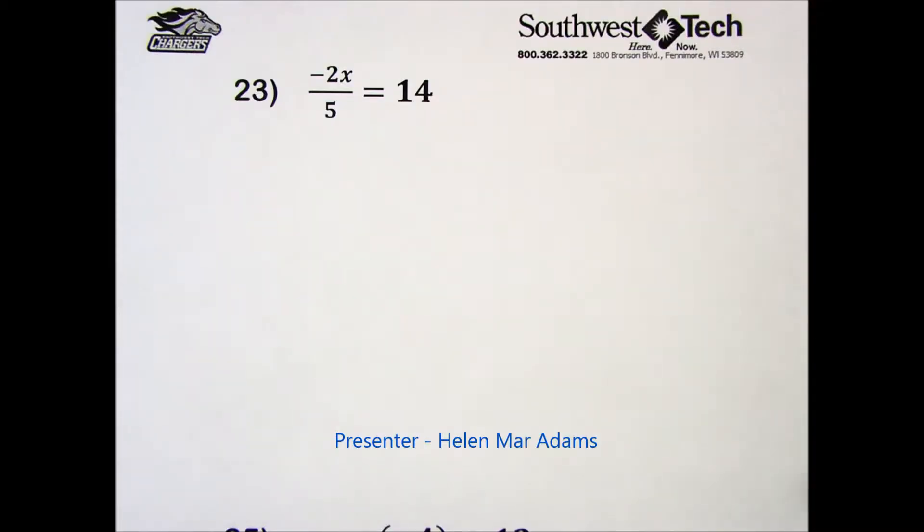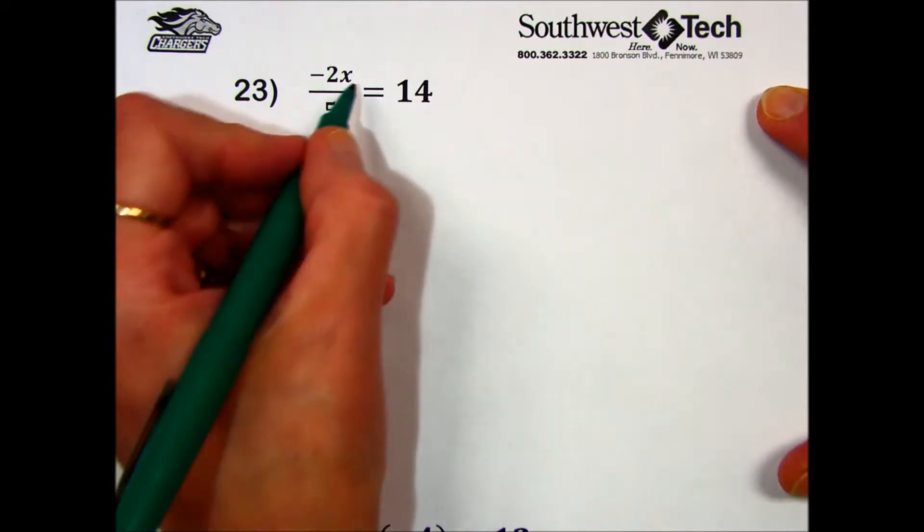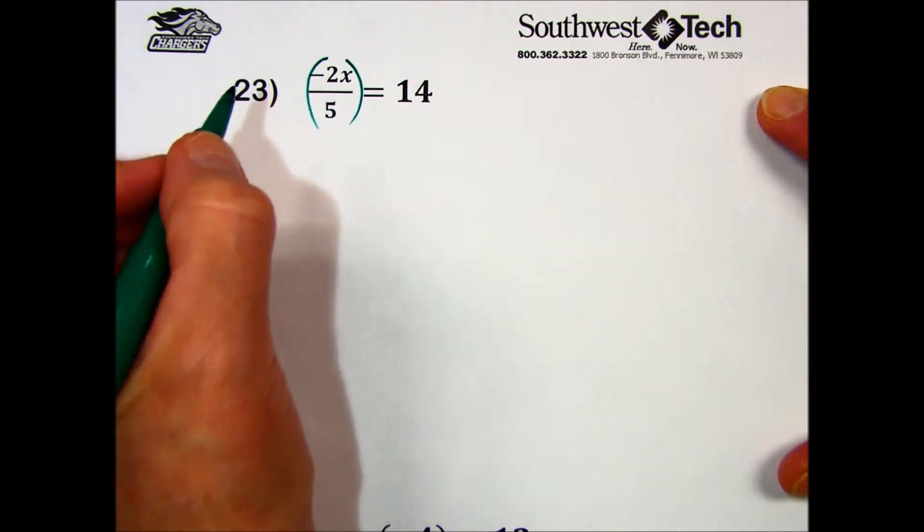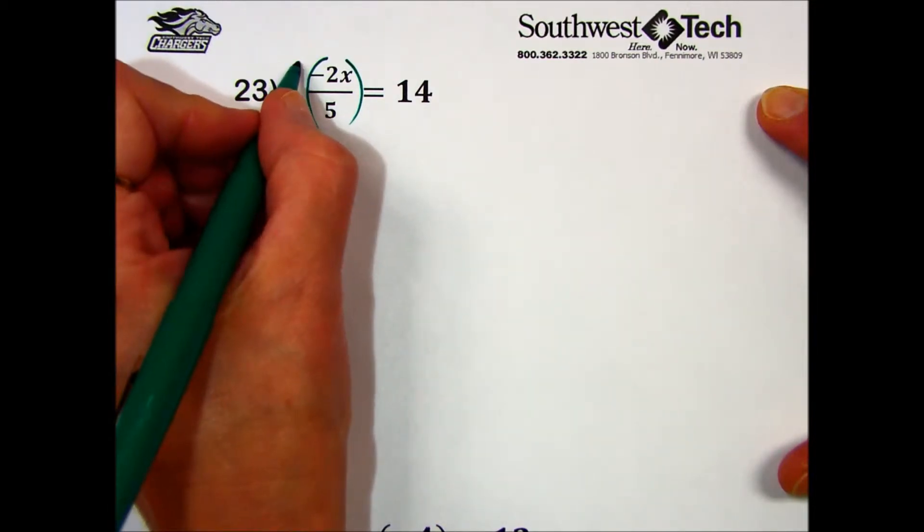Practice set 22, problem number 23. In this equation, x is being multiplied by a fraction. Probably the best procedure, and involving only one step, is to multiply both sides of the equation by its reciprocal.